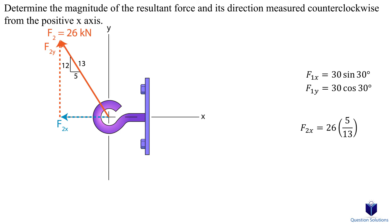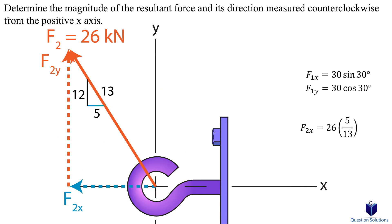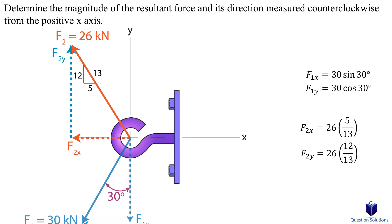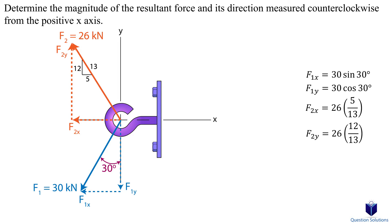The easiest way to see this is to look for corresponding sides. On the mini triangle, the side length of 5 corresponds to the same side as our big triangle. For the y component we use 12 over 13 — the 12 length side corresponds to the y component side of our big triangle. If you keep that in mind, using slope triangles becomes second nature.